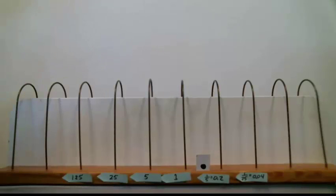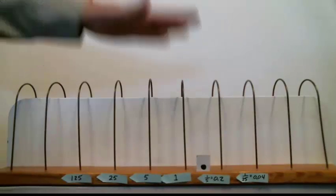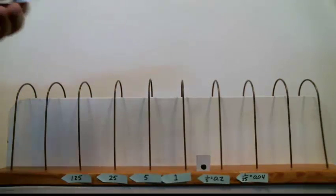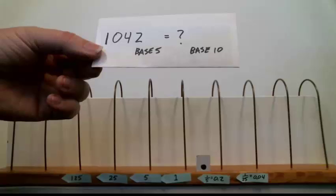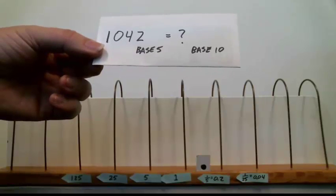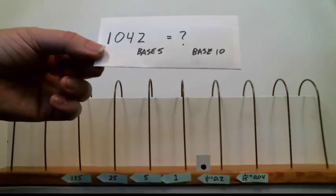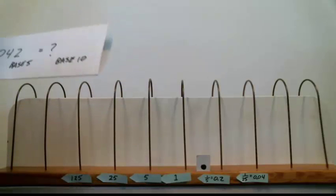Let's convert another number in base 5 using the setup we have for the base 5 vertical abacus. Here's the number I want to convert. 1, 0, 4, 2 in base 5. What is that in base 10?